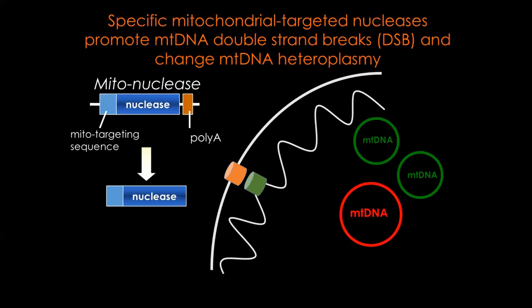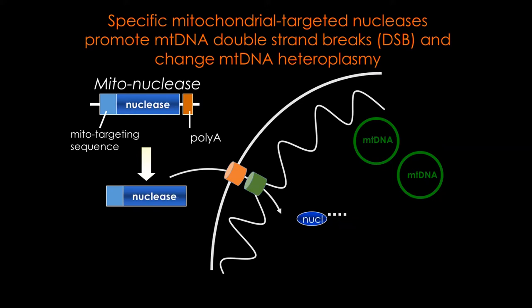For many years, we've been using this approach of trying to get some enzyme — in this case, a nuclease — that we can target to mitochondria, expressed in the nucleus so the protein will go to the mitochondria. If the nuclease is specific enough, it might hit one mitochondrial DNA haplotype, in this case the mutant one, and leave the wild type alone. Once it's cleaved, it's quickly degraded. And because there's a copy number control in mitochondria, the residual mitochondrial DNA will replicate and change the heteroplasmy.